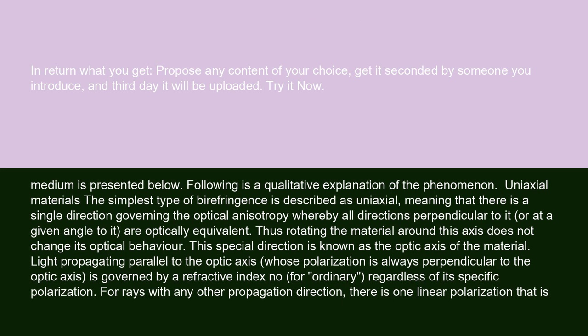The simplest type of birefringence is described as uniaxial, meaning that there is a single direction governing the optical anisotropy, whereby all directions perpendicular to it, or at a given angle to it, are optically equivalent. Thus, rotating the material around this axis does not change its optical behavior.